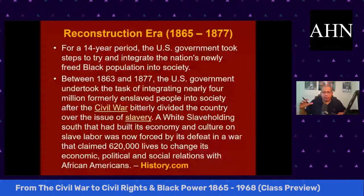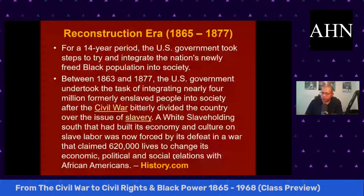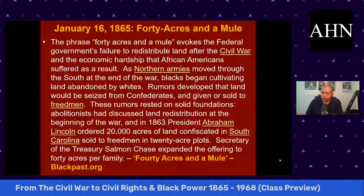The South was largely destroyed, and this was a period of time when the government was not only trying to integrate African Americans into the population, but also trying to rebuild the South at the same time. We deal with 40 acres and a mule, Special Field Order No. 15, which applied to 400,000 acres of coastal land in South Carolina, Georgia, and Florida, broken into plots of up to 40 acres per plot divided among about 40,000 African-American families.